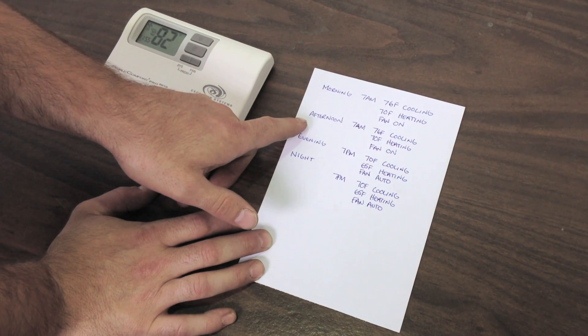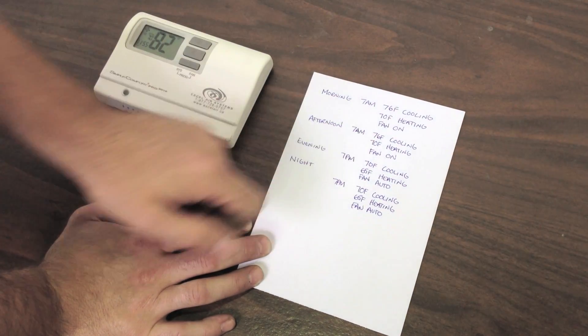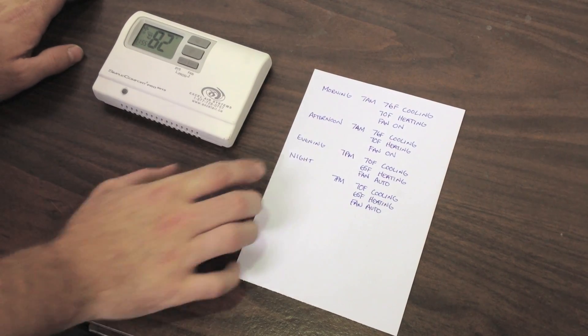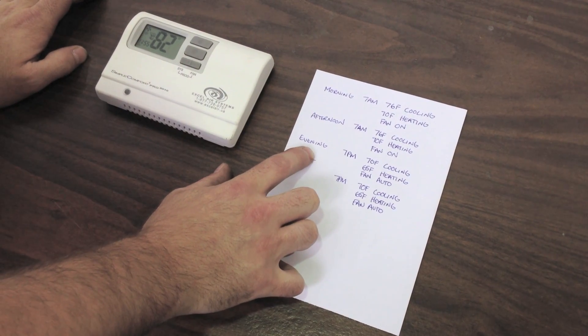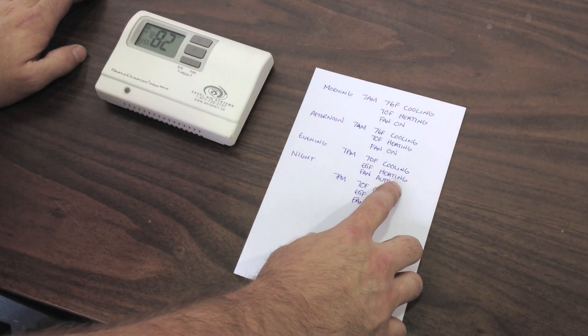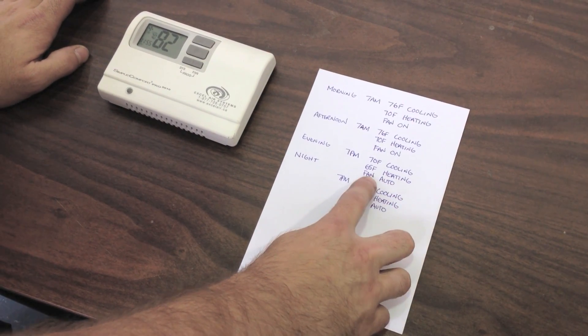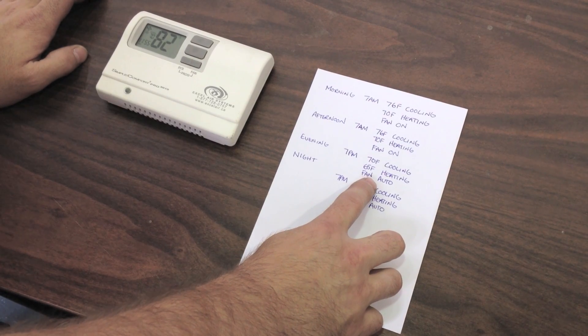Our afternoon schedule is identical to the morning in the time and temperature set. Now, on our evening schedule for 7 p.m. at night, with our cooling now set lower to 70 degrees Fahrenheit and our heating set lower to 65 degrees Fahrenheit.